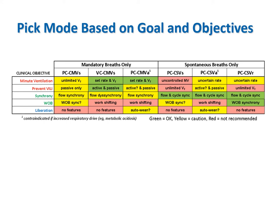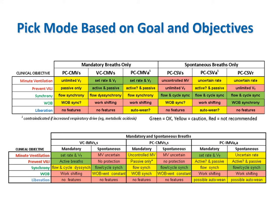Clinical objectives are color-coded: red for safety, green for comfort, blue for liberation. The table shows mode categories that use only mandatory breaths (CMV) or only spontaneous breaths (CSV). Reading across the rows, the clinical objectives determine the appropriateness of potential mode selections. Green shading indicates modes that serve the objective and are recommended. Yellow shading indicates modes that only partially serve the objective and should be used with caution. Red shading indicates the mode has no features to specifically serve the objective. The card also has a table that includes IMV type modes—types 2 and 3 are generally better than type 1.